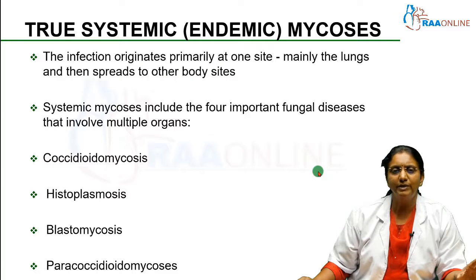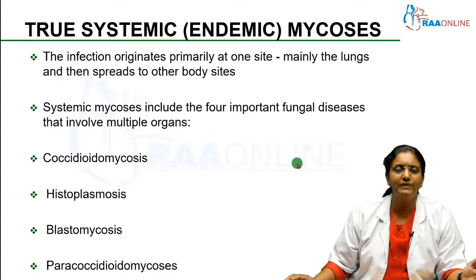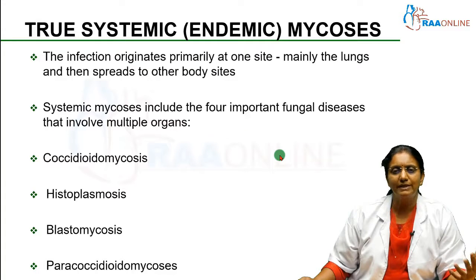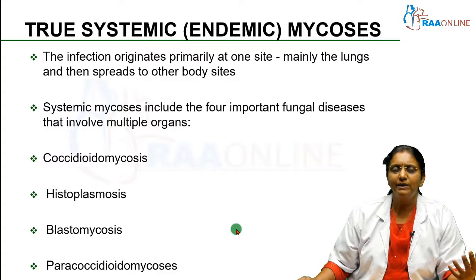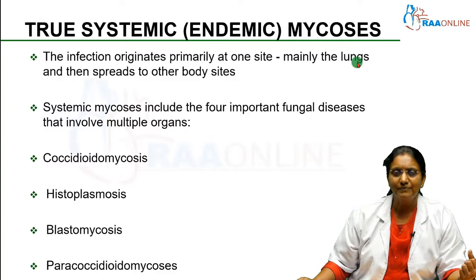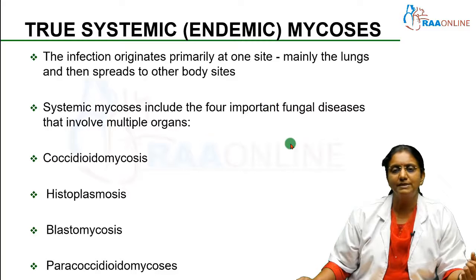That is why they are also known as endemic mycosis. The main feature of systemic mycosis is that the infection originates at one site. Mainly, for all these four types, we get the infection by inhaling the spores. When you inhale it, it goes into your lungs and then from the lungs it will spread to the other body sites.